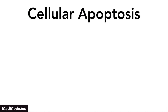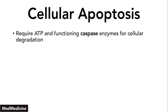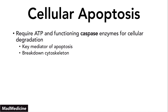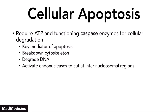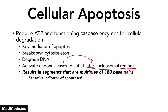When it comes to apoptosis, you need to remember that this pathway requires ATP, but it also requires functioning caspase enzymes. Caspases are a key mediator protein or enzyme for apoptosis. They play a role in degrading the cytoskeleton, and they also help to degrade the DNA by activating endonucleases. When they activate these endonucleases, the endonucleases degrade the DNA by cutting at the internucleosomal regions — and this is a very sensitive, high-yield indicator of apoptosis.